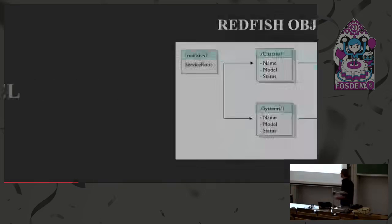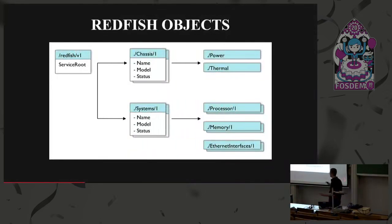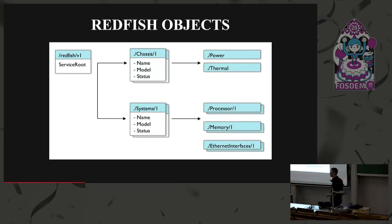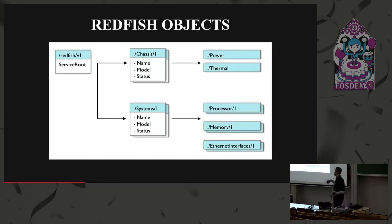It might help to take a look at the actual object model. Since this is all REST it's a little easier to read than something like an SMIS protocol specification. Everything is off the redfish/v1 route - to do anything with either Redfish or Swordfish you get that service route, and from there you can navigate to all the other things. There's a collection of systems, then individual systems, which get you processors, memory, and so on.